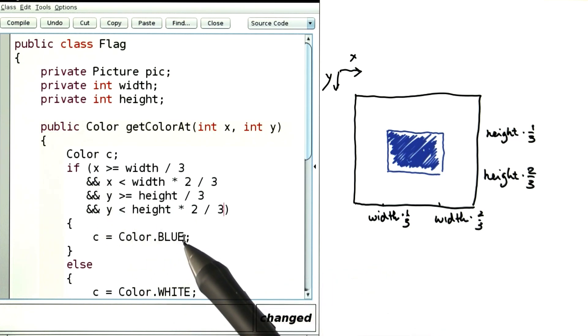When all of them are true, then the pixel should be blue, otherwise it should be white.